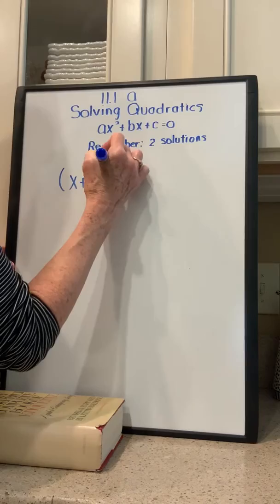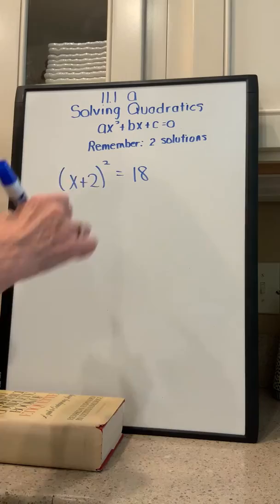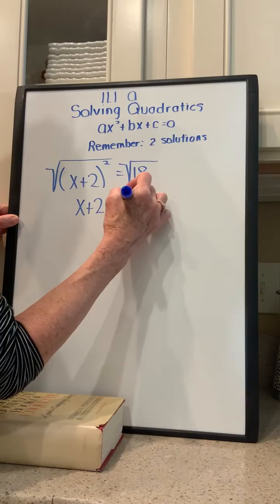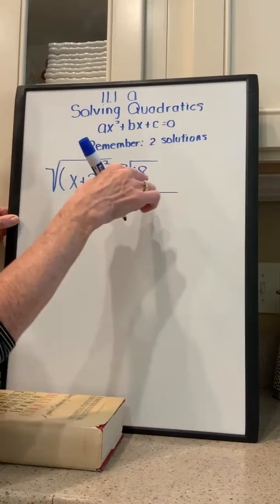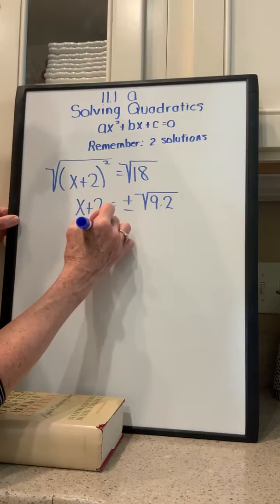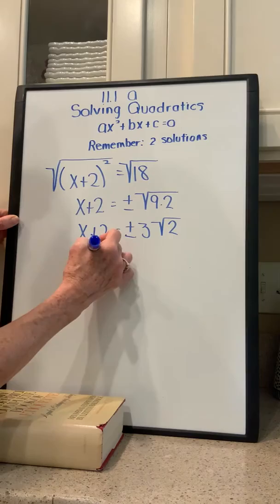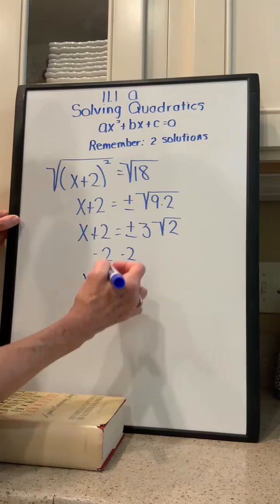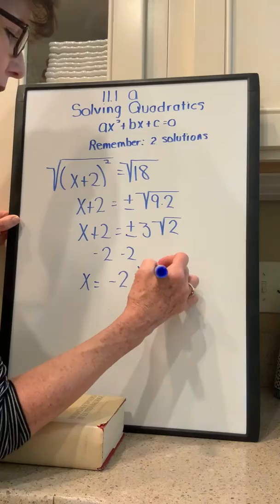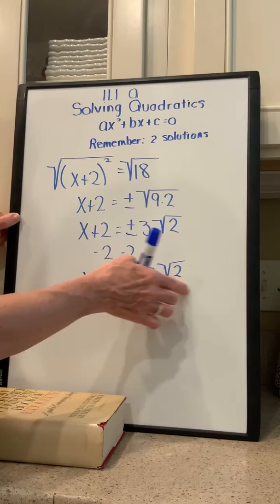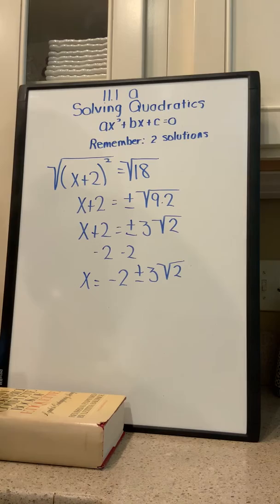We have the quantity x plus 2 squared is equal to 18. We're going to take the square root of both sides because the square root undoes a square, so we're left with x plus 2 is equal to plus or minus the square root of 18. Remember, 18 is 9 times 2, so this is x plus 2 is equal to plus or minus 3 times the square root of 2. To get x by itself, we subtract 2 from both sides. You write your negative 2 first, then plus or minus 3 times the square root of 2. If you have a radical, the rational number part comes first and then the irrational number part. That's just standard notation.